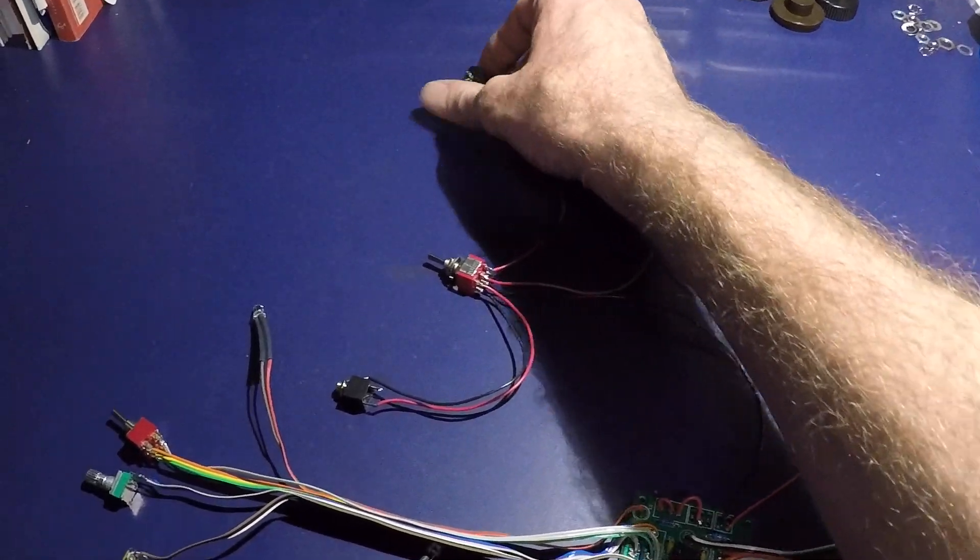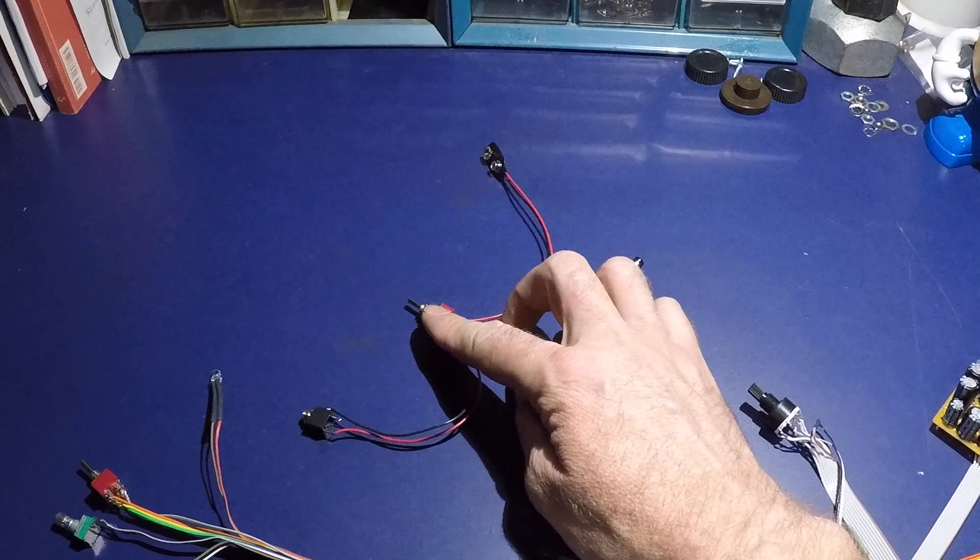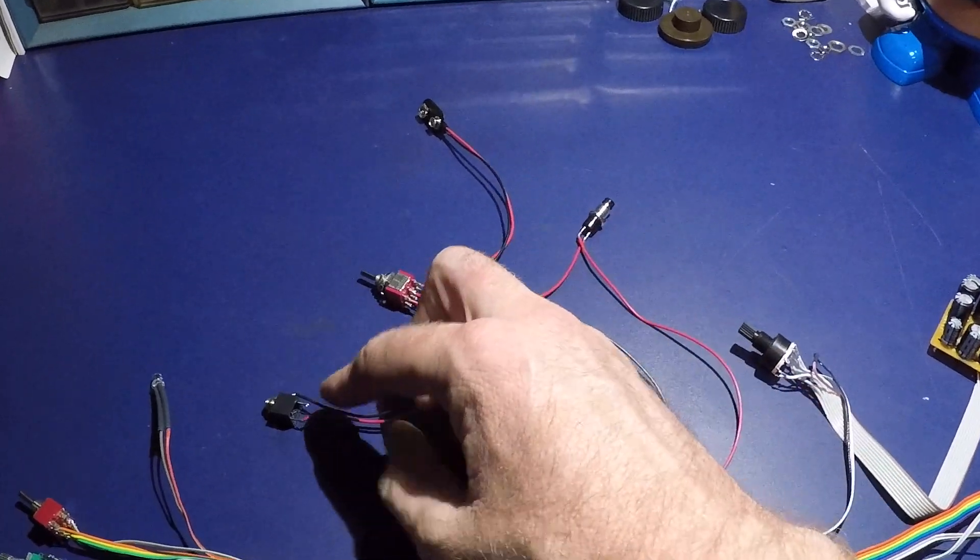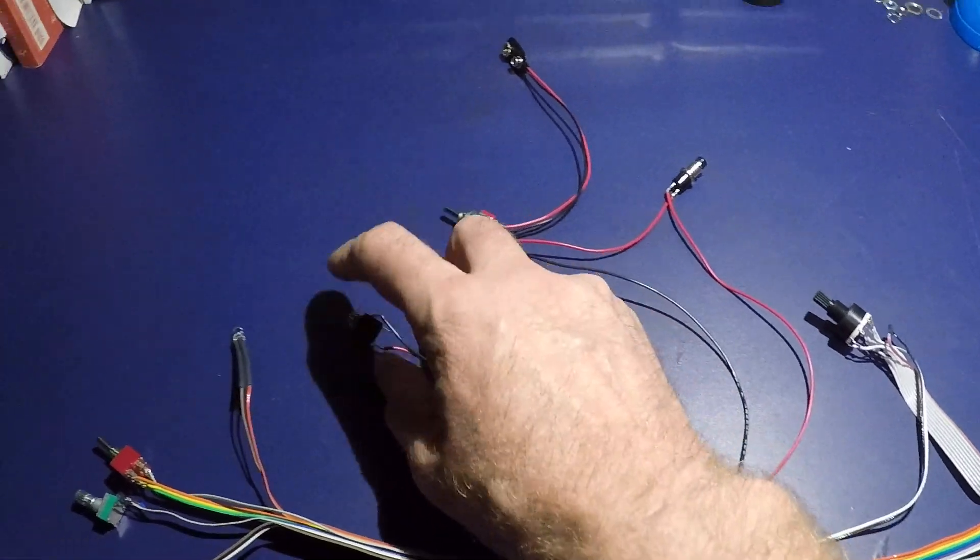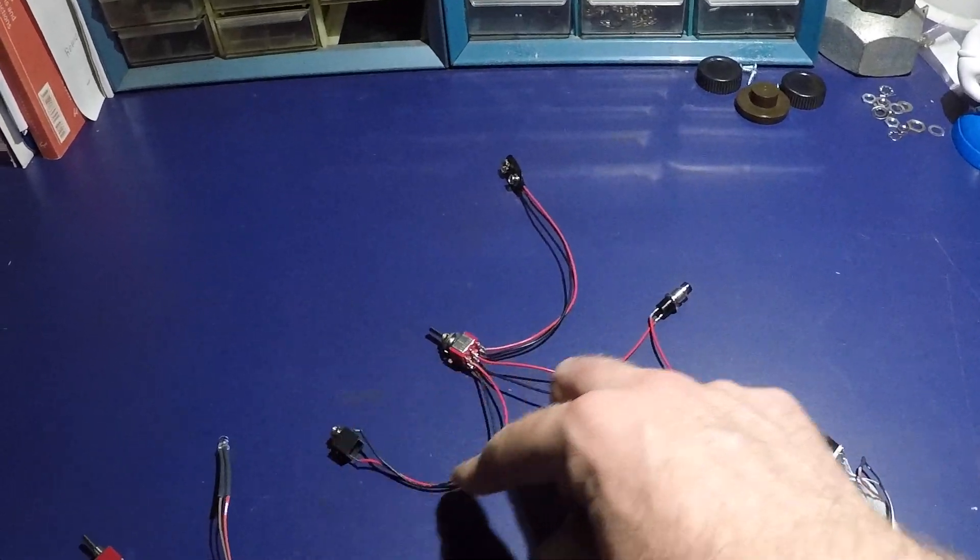And then over here, we have the battery power connected to double pole, double throw toggle switch again. And then that's connected also to a mini jack in for a CV input, so that switch selects between battery power and CV input.